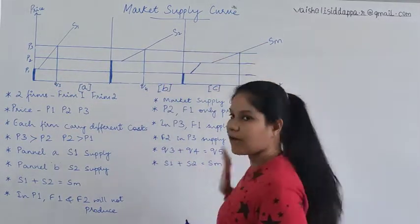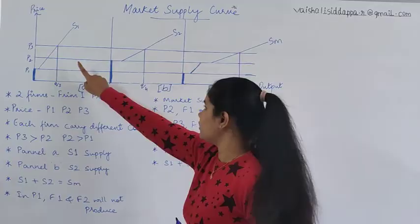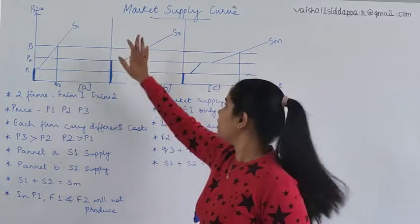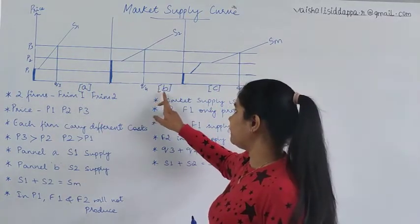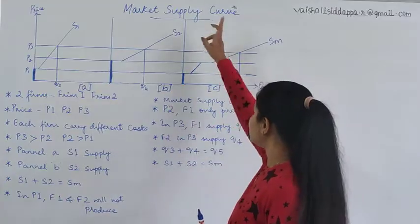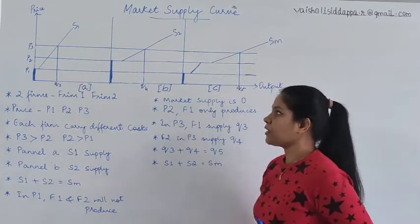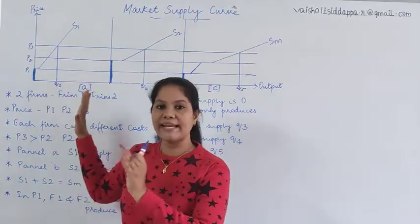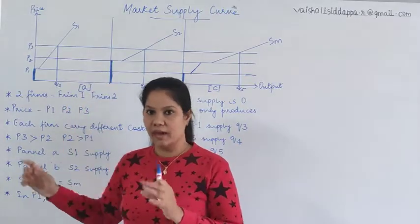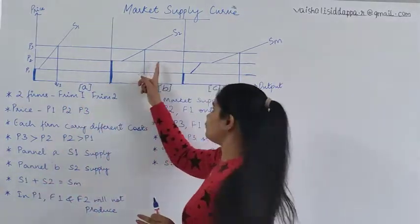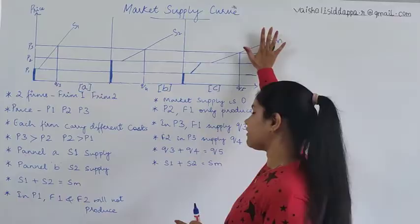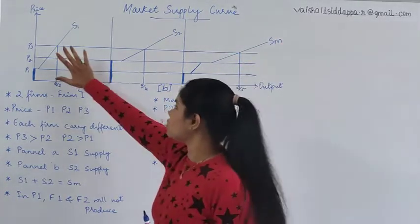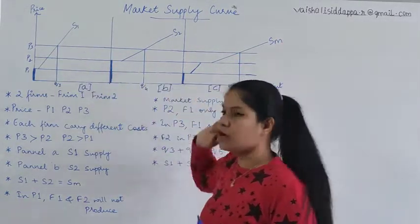We have three diagrams here. The first is called panel A, the second is panel B, and the third is panel C. Right now let's focus on firm A and firm B.